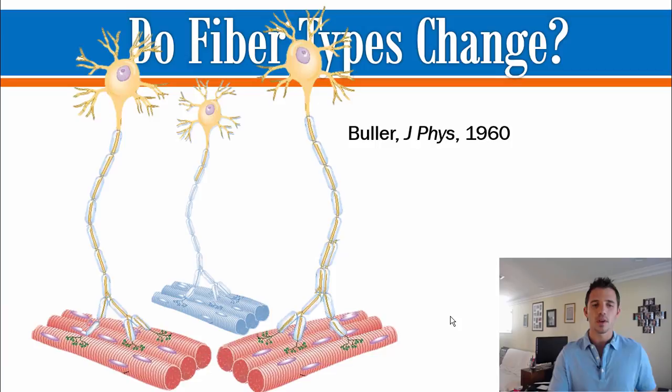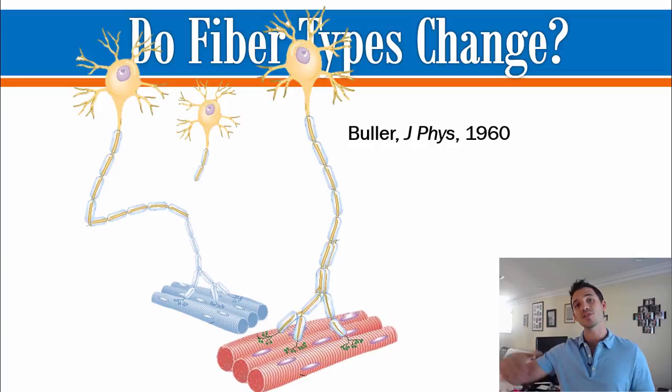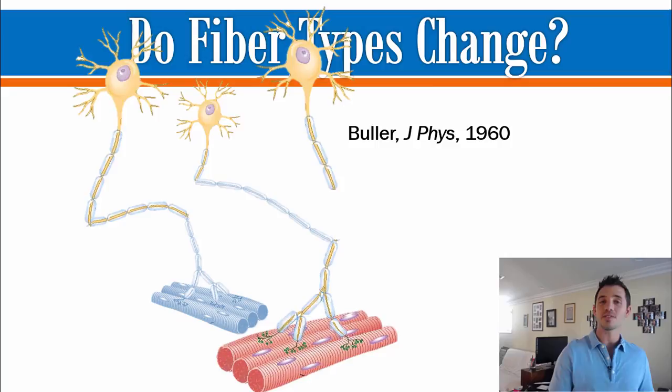So what they did in this famous study is they took a slow motor unit that normally innervates and activates slow twitch fibers, and some that are fast twitch, and crossed them. They cut the fast twitch neuron and attached it to the slow twitch fibers, and cut the slow twitch neuron and attached it to the fast twitch fibers. Then they watched to see what happens.